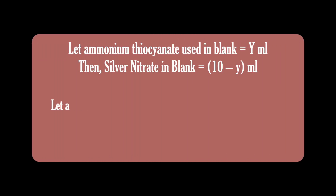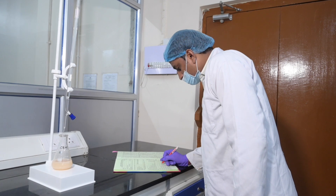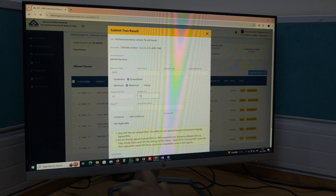Let ammonium thiocyanate used in the blank equal y mL. Then silver nitrate in blank equals 10 minus y mL. Let ammonium thiocyanate used in the sample titration be x mL. Silver nitrate consumed by the chlorides, Z, equals (10 minus y) minus x mL. Percent chloride (Cl) equals Z multiplied by 0.03546 multiplied by 0.025 multiplied by 100, divided by mass of sample. The percentage of chloride content in cement is reported on the LIMS portal in the final test report issued by Patna Branch Laboratory.